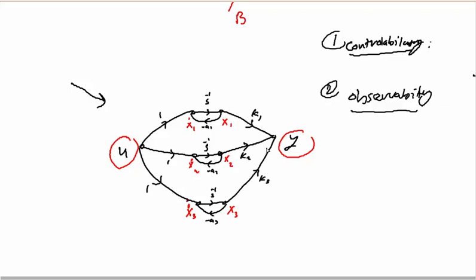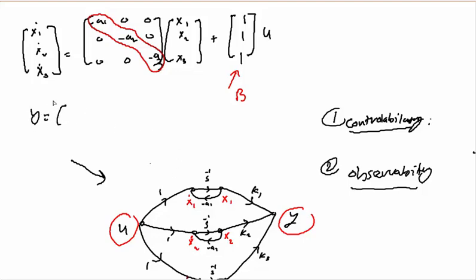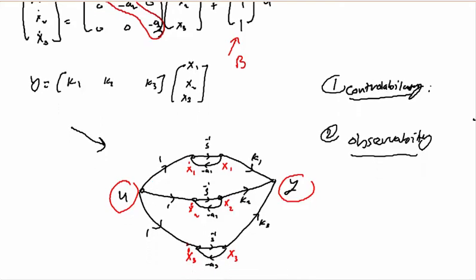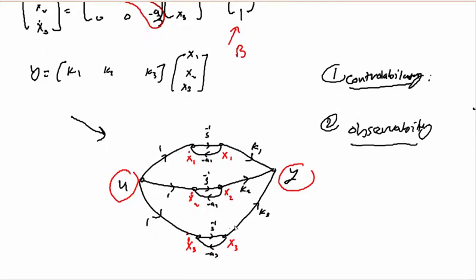If any of the output connections k is equal to zero, that means the system is not observable. If k is equal to any number other than zero, the system is observable. Let me write the C matrix: the output matrix equals [k1, k2, k3] times [x1, x2, x3]. There is no direct connection from u to y, so the D matrix is zero. If any of these k values equals zero, the system is not observable; if all are non-zero, the system is observable, because y is observing the states with some weights.